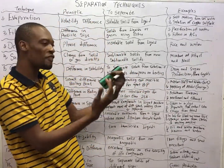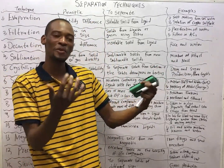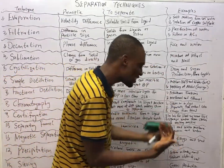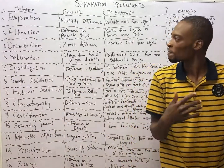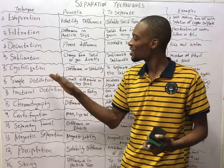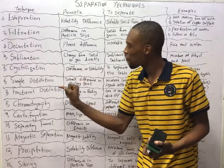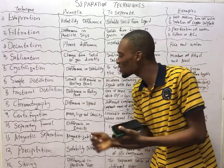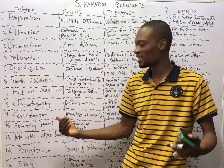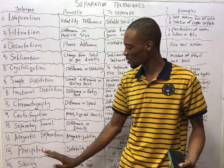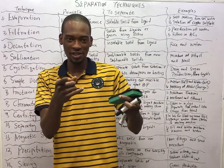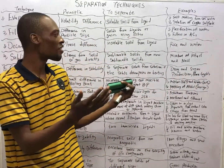Separation techniques are the various methods we apply to separate things that are mixed physically. So, depending on the type of mixture, we have: evaporation, filtration, decantation, sublimation, crystallization, simple distillation, fractional distillation, chromatography, centrifugation, separating funnel, magnetic separation, precipitation, and sieving. These are 13 separation techniques.